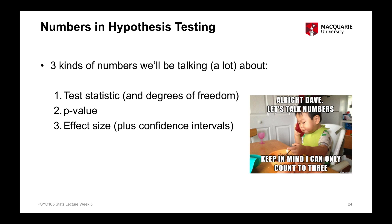The third kind of number, which I would tell you is the most important of those three, is an actual way of representing the size of the effect itself. The test statistic reflects the size of the effect to a certain extent, but the value of the test statistic is affected by a whole lot of different things, and the size of the p-value is affected by a whole lot of different things which don't inherently reflect the actual size of the effect. The effect size calculation is a more pure way of looking at how big the size of the effect is.